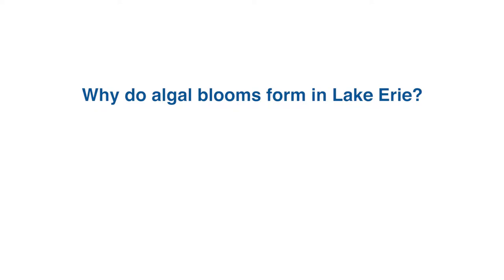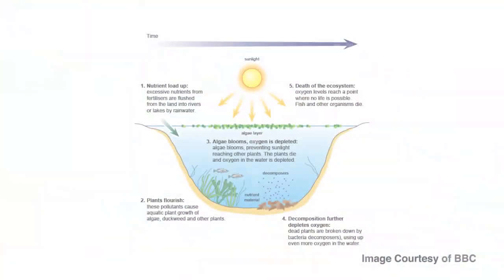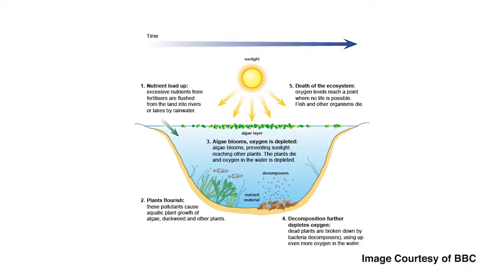The main factors leading to algal blooms are similar to any type of plant growth, even though different types of algae aren't exactly the same as corn or an oak tree. You need all the things that you need for a plant: it needs to be warm enough, it needs fertilizer, and there needs to be sunlight for it to grow. If those occur in the right combination, you get the kind of growth that you want.